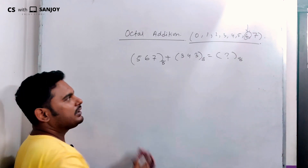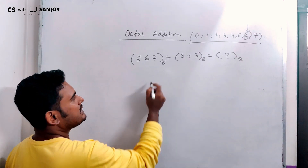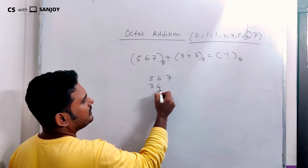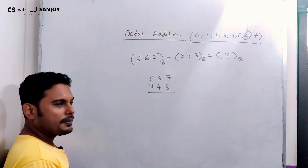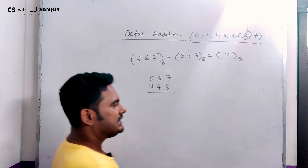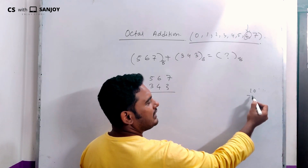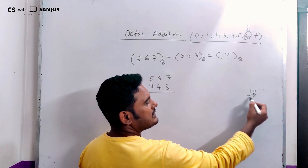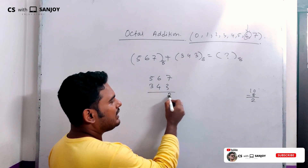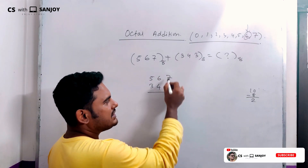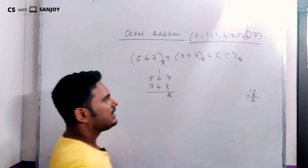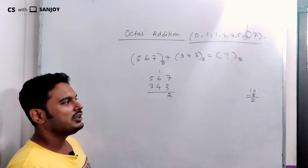Let's see how we solve this example. We have 567 and 343 in octal. We add 7 and 3: that gives 10. 10 divided by 8 gives quotient 1 and remainder 2. So the sum digit is 2 and the carry is 1.